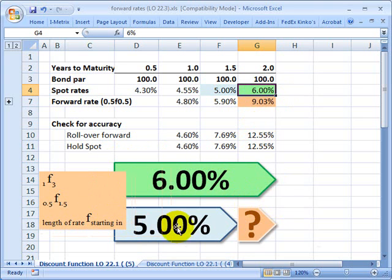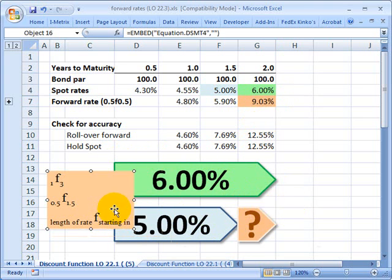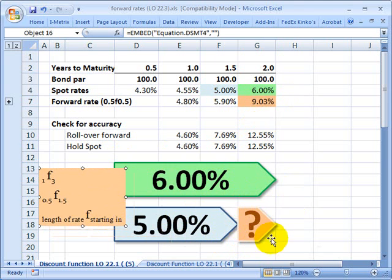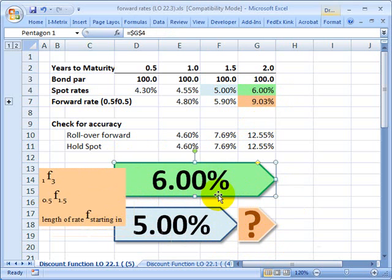all we're really solving for is this orange arrow, where the green arrow is the two-year spot rate. And so you can see it extends the full length of two years. We know that.